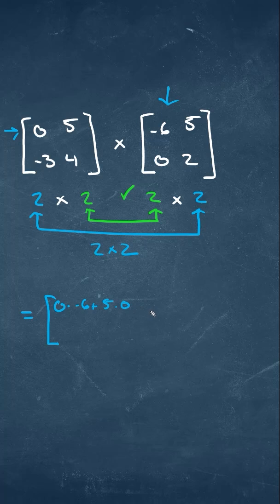So we'll have 0 times negative 6 plus 5 times 0. Then moving on with the same row in the second column, we'll have 0 times 5 plus 5 times 2.